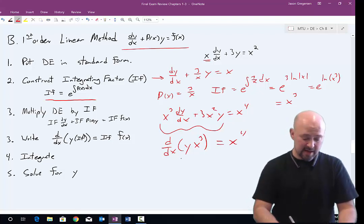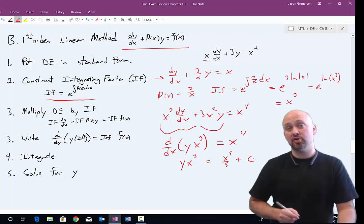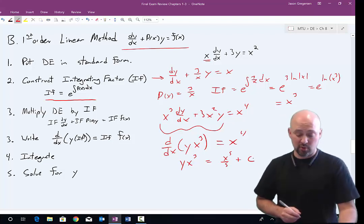So if I integrate both sides with respect to x, on the left I'll just get y times x cubed. On the right-hand side, I'll get x to the fifth over five plus my constant. Make sure you bring your constant in right away as soon as you do the integration here.